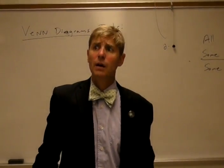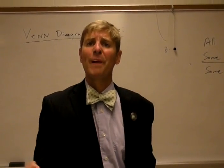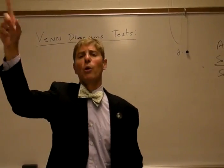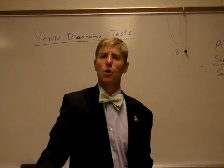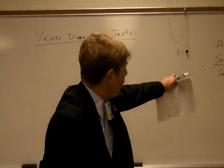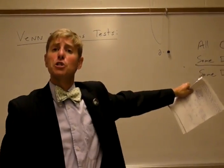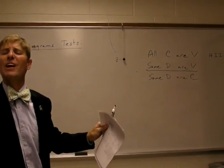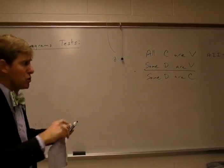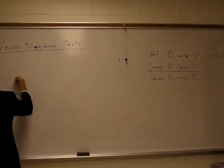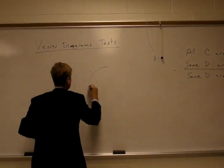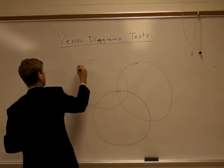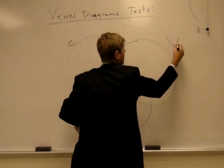The last ones we've done only incorporated universal premises, so we were shading in areas where there were no members. We're now going to be talking about particulars, so we'll be placing an X in the area in which we know that there are members. Let's get down to it. Before my ink runs out. C, V, and D.